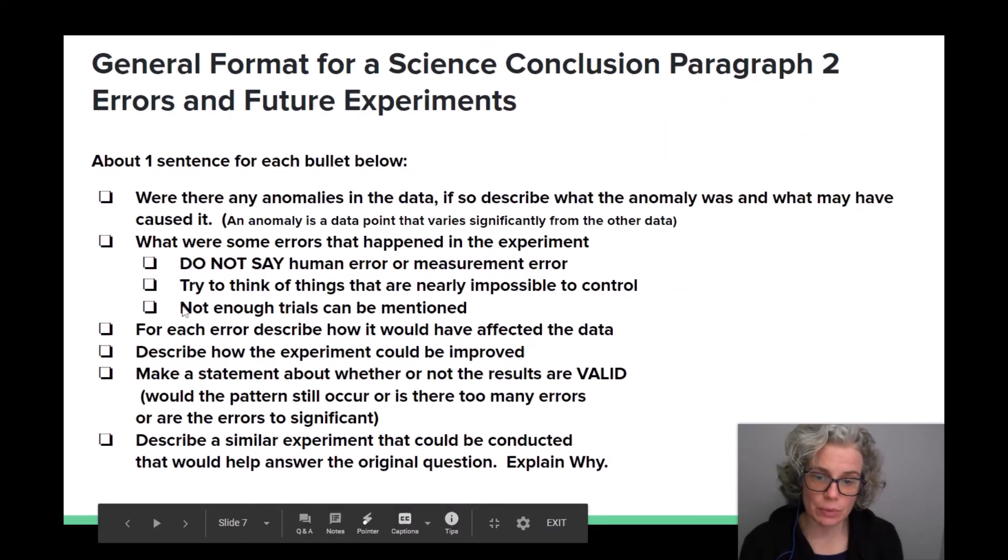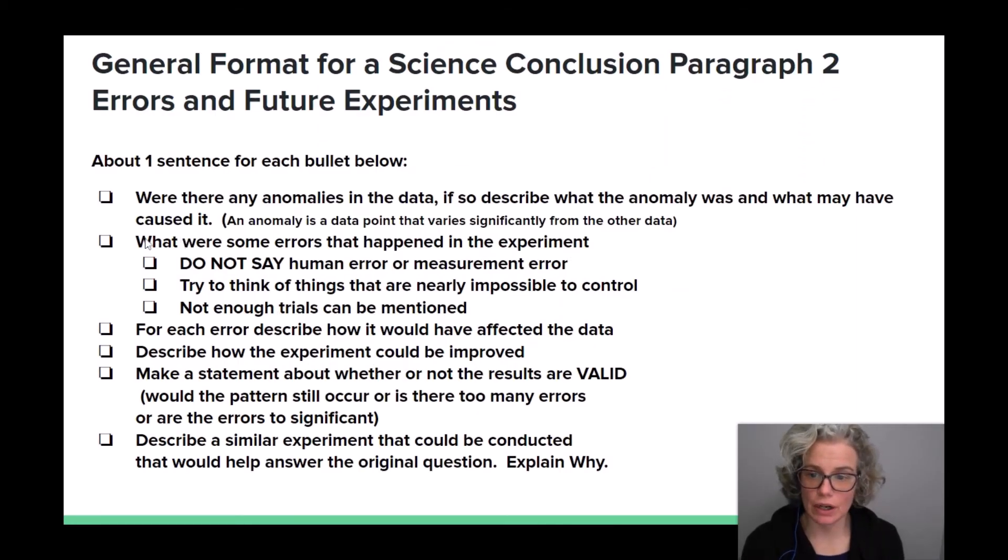I basically started with this part, this bullet here. What were some errors that happened in the experiment? We didn't say human errors. We tried to think of things that were nearly impossible to control and we did mention how it would have affected the data.